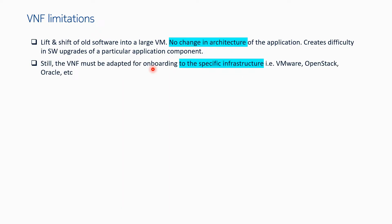Another limitation: the VNF must still be adapted for onboarding to a specific infrastructure like VMware, OpenStack, or Oracle. You cannot run an OpenStack-based Heat stack file onto VMware infrastructure, and you cannot take a VNF running on VMware and simply run it on OpenStack. You can migrate from one OpenStack infrastructure to another OpenStack, but migrating between VMware, OpenStack, Oracle, or public cloud is not easy. That infrastructure dependency is still there.